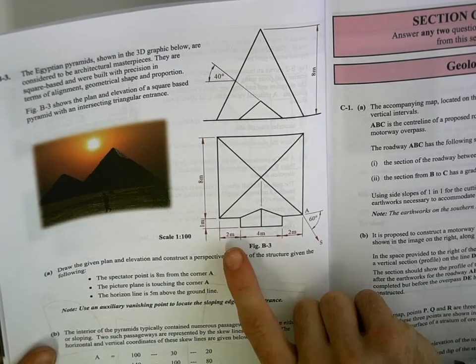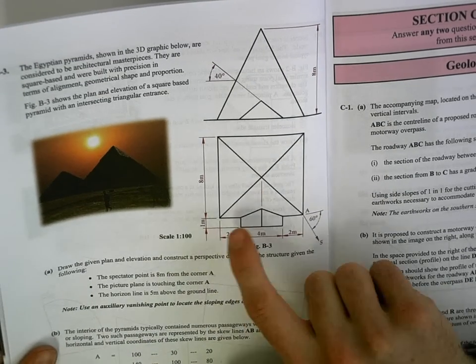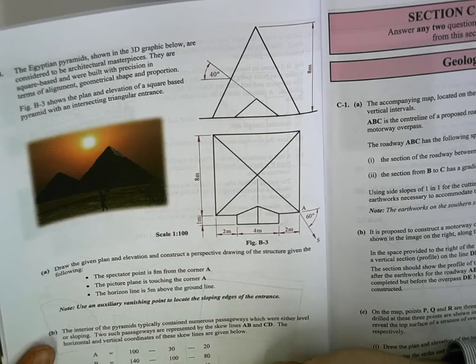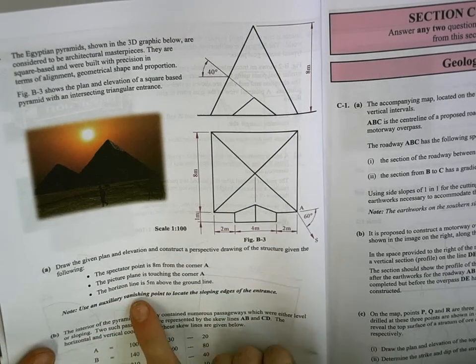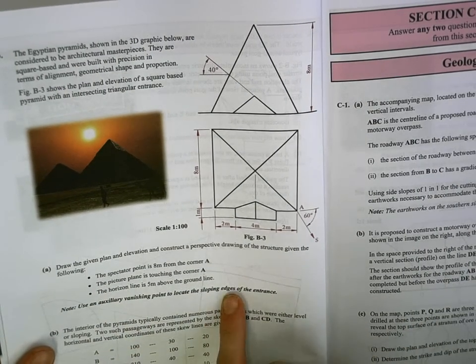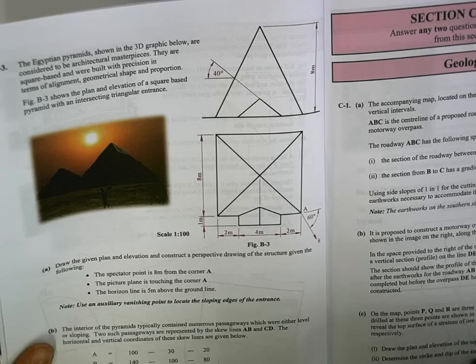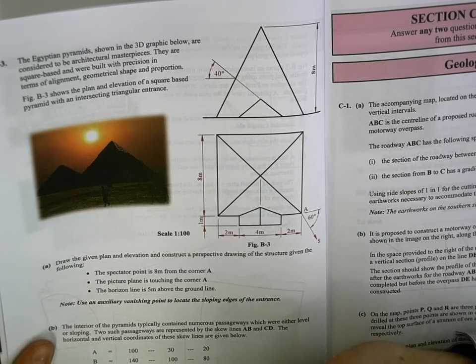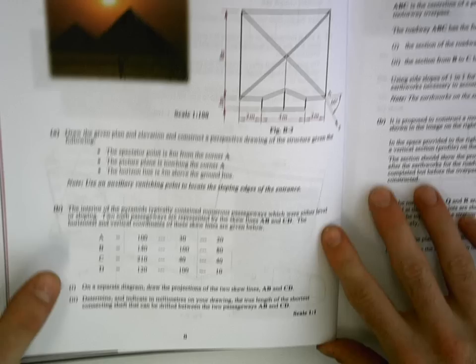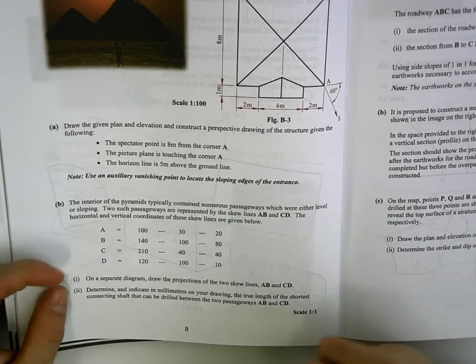So our scale is 1 to 100, so this would just all be 20, 40, 20, 10, 80 and so on. They do note that we have to use auxiliary vantage points to locate the sloping edges of the entrance, so our height method would work for that, but we have to use our auxiliaries. Part B is a skew lines question, which we'll go through separately.